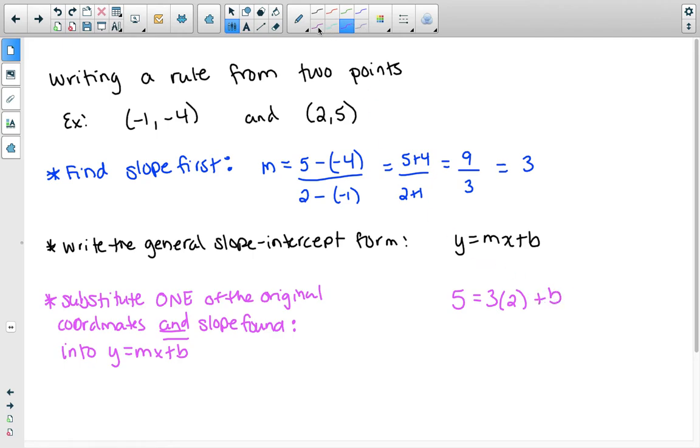Our next step will be to solve for b. In order to solve for b, I'm going to stick on this side because I have parentheses over here. I'll have that 5. So that's my next step. We'll have the 5 equals 3 times 2 is 6 plus b.